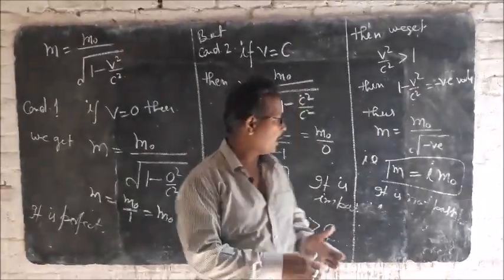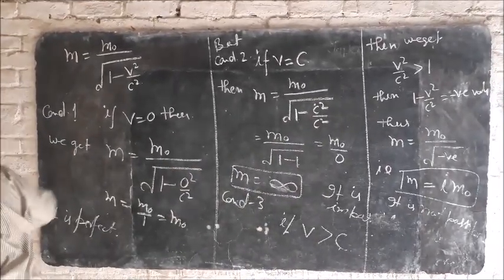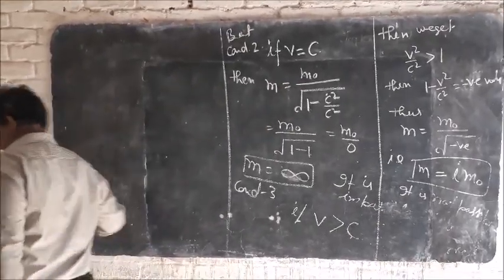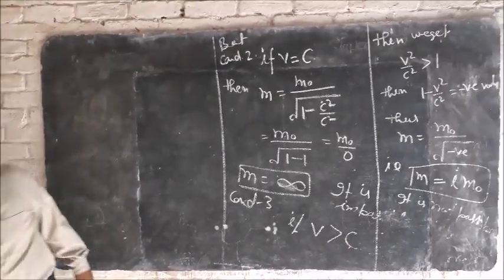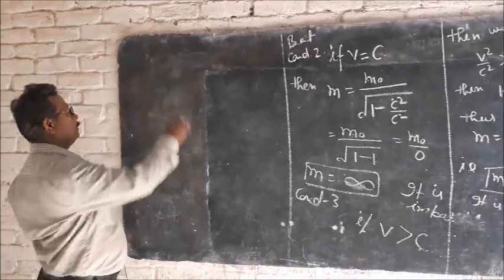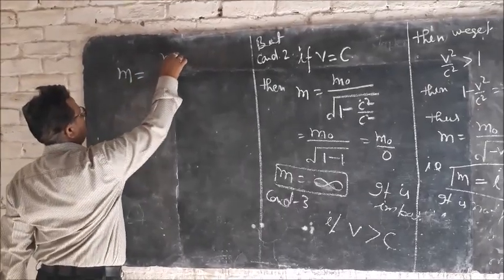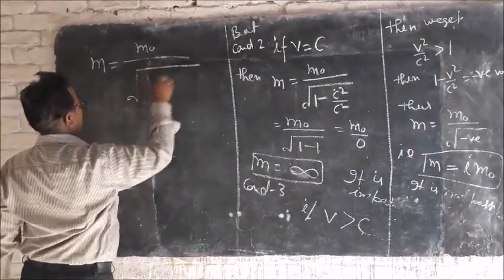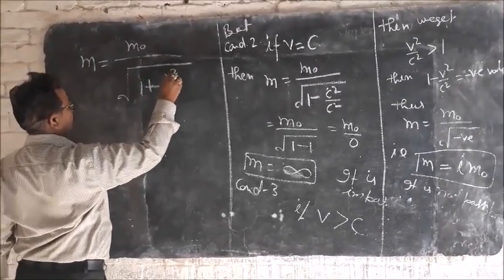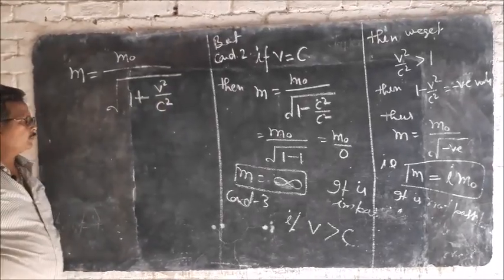On the basis of this discussion I have provided a new equation of the theory of relativity. According to me, the new equation will be: moving mass of object equals the rest mass of object upon the square root of 1 plus velocity square of object upon velocity square of light. Thank you.